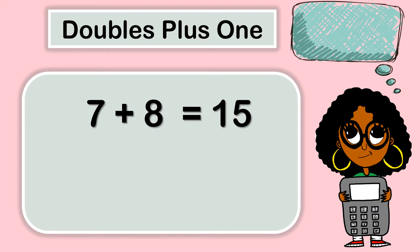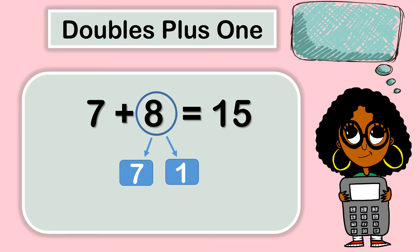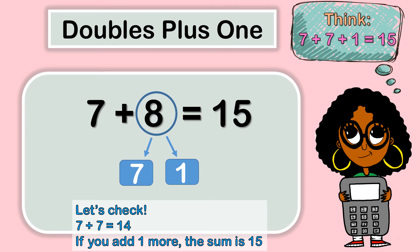Now let's look at doubles plus one. Seven plus eight equals 15. Let's look at the digit eight — eight is going to be broken apart into two digits: seven and one. So think like this: seven plus seven plus one equals 15. Let's check. Seven plus seven equals 14 — that is our doubles. But if you add one more, you are going to get the sum 15. This is our doubles plus one example because we are adding one more.